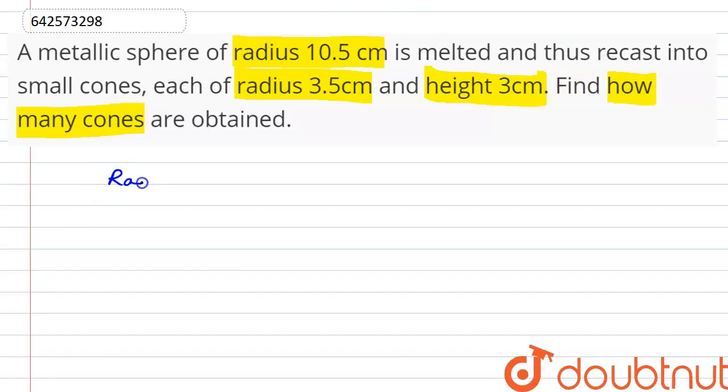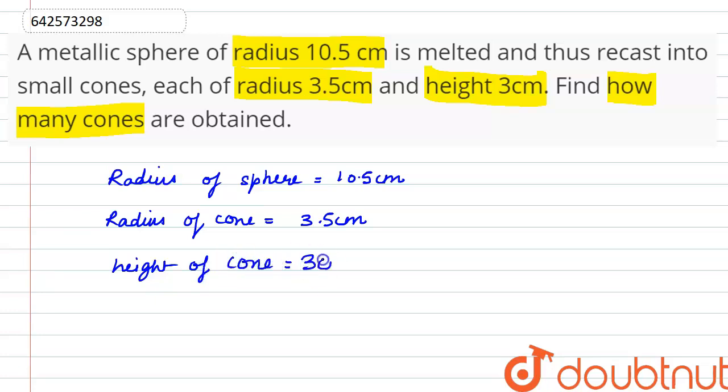The radius of the sphere is 10.5 cm and we are also given that the radius of cone is 3.5 cm and the height of the cone is 3 cm.